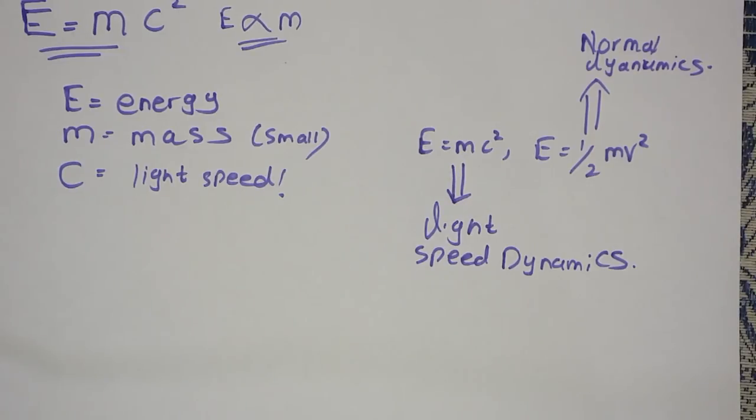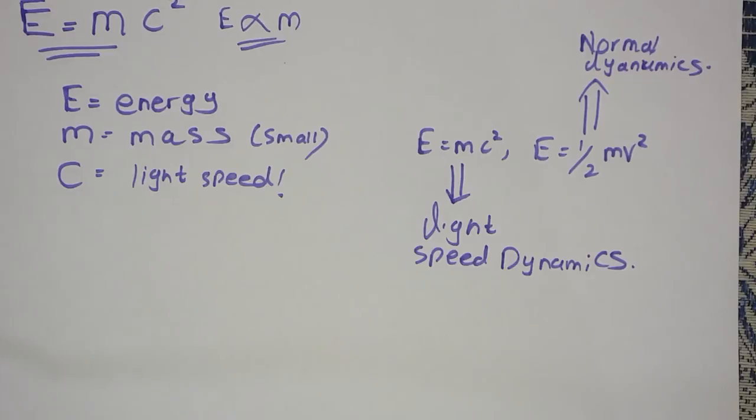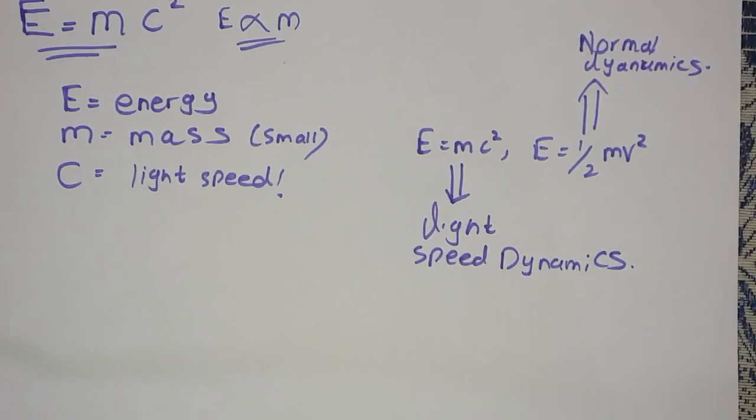So, for any particle which has its velocity close to speed of light, it will have its time dilated, it would have its length contracted, it would have its mass increased due to dynamic mass, its momentum increased and all that stuff.